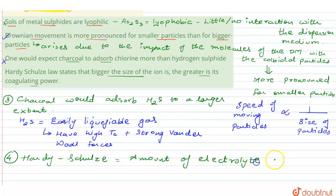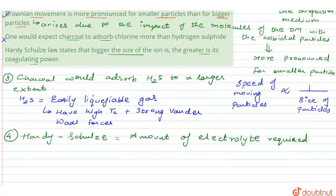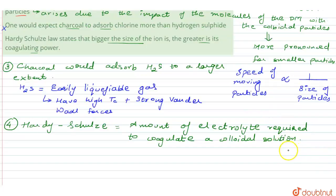...which would be required to coagulate a colloidal solution. So there are many factors upon which this coagulation depends. For instance we can say that if at all we were considering the charge, the valency part, you would always see that greater the valency, more would be the coagulation. So similarly in that case we can say that smaller the size...